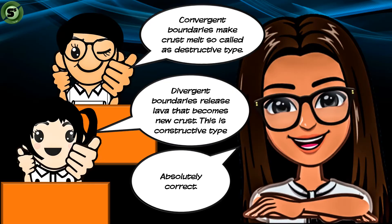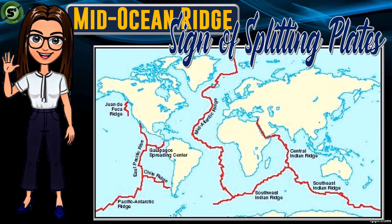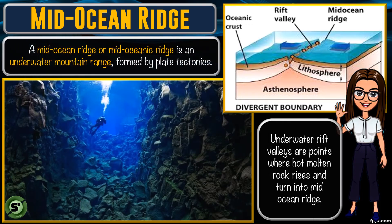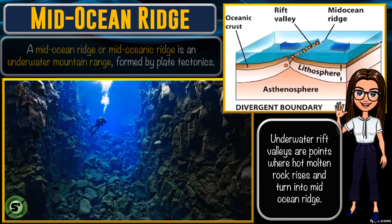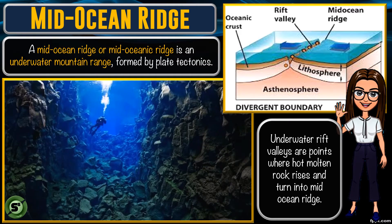Diverging boundaries are called the constructive type. Mid-ocean ridges were first discovered during World War II when soldier submarines accidentally observed patterns of unusual structures underwater. As lava fills the gap along the underwater rift, underwater mountain ranges are formed — called the mid-ocean ridge. The Mid-Atlantic Ridge developed as a consequence of the divergent motion between the Eurasian and North American plates, and the African and South American plates.